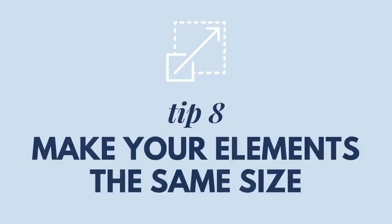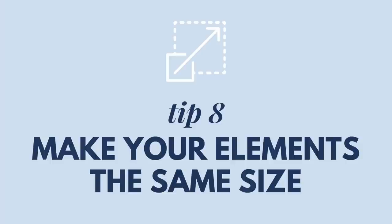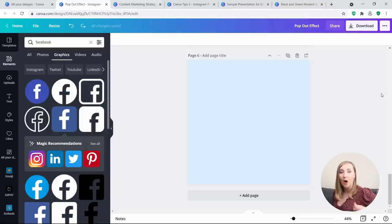Tip number 8: Make your elements the same size. I do consultations regularly and this is something I notice people often struggle with, so I definitely wanted to add it to my tip list. If you want to make all of your different icons or elements the same size, I'll use social icons as the easiest example.